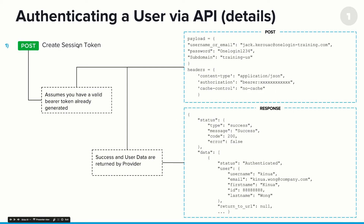Here's what the request looks like. You'll be doing a POST operation, and this assumes you have a valid bearer token obtained through the OAuth flow. As part of the payload, you'll pass in the username or email, the user's password, and your subdomain. The headers will include the content type and the bearer token with your current access token. If this succeeds, you'll get a 200 response returning information about the user — specifically their username, email, first name, last name, and most importantly, their user ID.